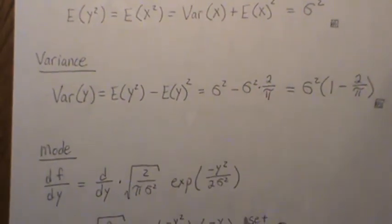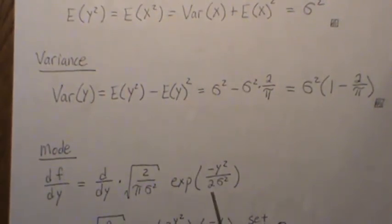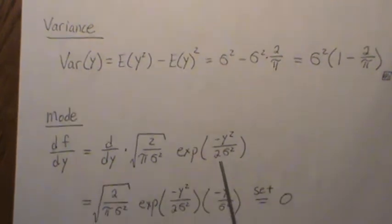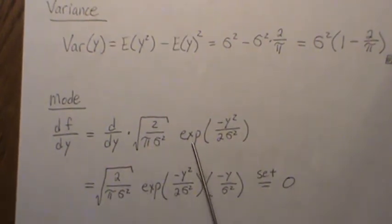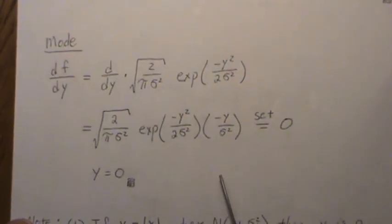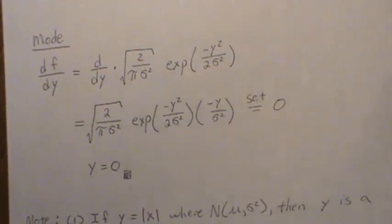Now to find the mode, we take the derivative of f with respect to y. So it's the derivative. And this was our density. So this is a constant. The derivative of exponential, you get it back. And the chain rule says take the derivative of this. Notice that this is a positive constant. So it can be taken over. And never zero. And this can never be zero. So you divide it over. And you're left with this. Multiply by sigma squared. Multiply by one. And you get the mode is equal to zero.